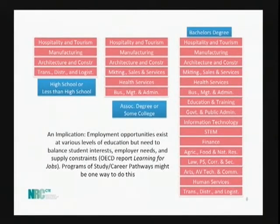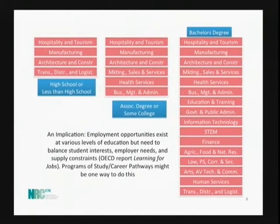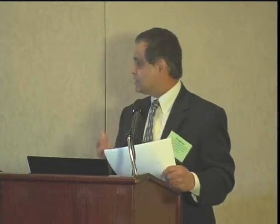The chart I put up shows occupations by cluster level broken out by education level, trying to look at a pathway from high school all the way up to the bachelor's degree. One thing that becomes clearer — as pointed out in the OECD report Learning for Jobs — is that you have to balance student interests, employer needs, and supply constraints. Programs of study, which are within the current Perkins legislation, might be one way of looking at this pathway process.